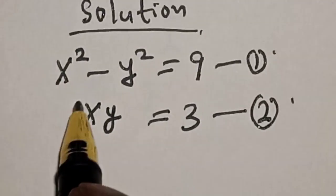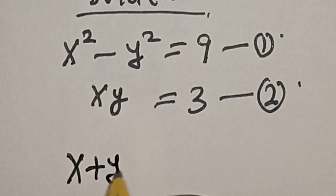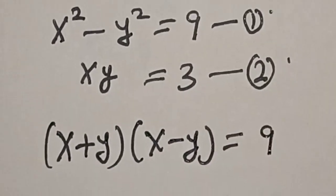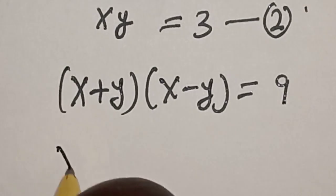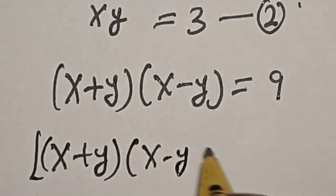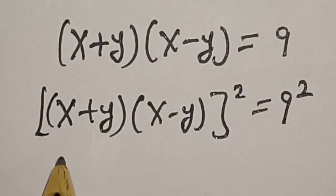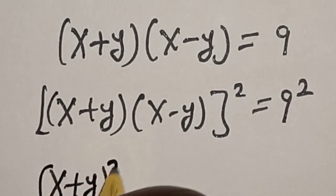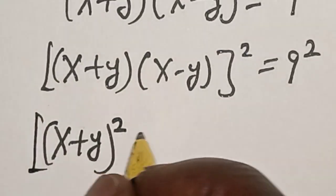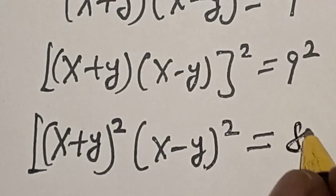From equation 1, this is a difference of two squares. That is, x plus y multiplied by x minus y is equal to 9. Then let's square both sides. We have x plus y multiplied by x minus y, squared, is equal to 9 squared. This is the same as x plus y squared multiplied by x minus y squared is equal to 81.